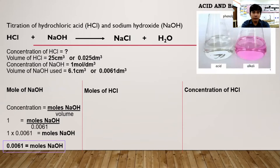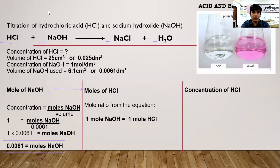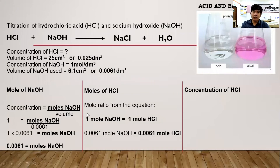To go from moles of NaOH to moles of HCl, use the mole ratio from the equation. Since there are no coefficients written, it is a 1:1 ratio — one mole NaOH to one mole HCl. Therefore, 0.0061 mol NaOH = 0.0061 mol HCl.